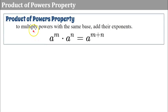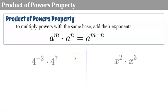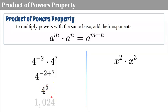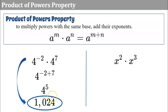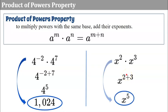Moving on to the product of powers property. This states that to multiply powers with the same base, we add their exponents. For example, four to the negative two times four to the seventh — same base of four — so we add the exponents: negative two plus seven equals five, giving us four to the fifth, which simplifies to 1024. For x squared times x cubed: same base, add the exponents two plus three equals five, giving x to the fifth.